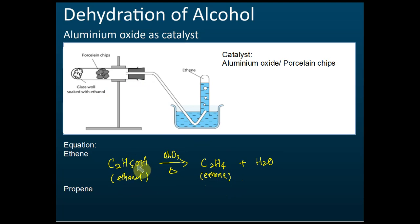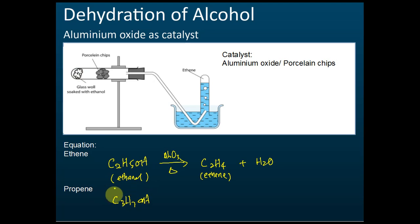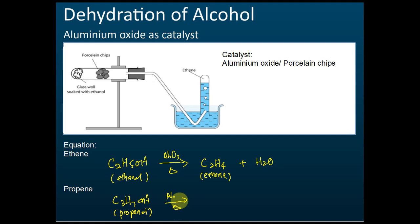To prepare propene, we need a three-carbon alcohol called propanol, with formula C₃H₇OH. We heat it with a catalyst, and it becomes propene, C₃H₆, while water is also produced. You need to know these equations, but don't worry if you can't remember them now — we'll revisit this when we study alcohol.